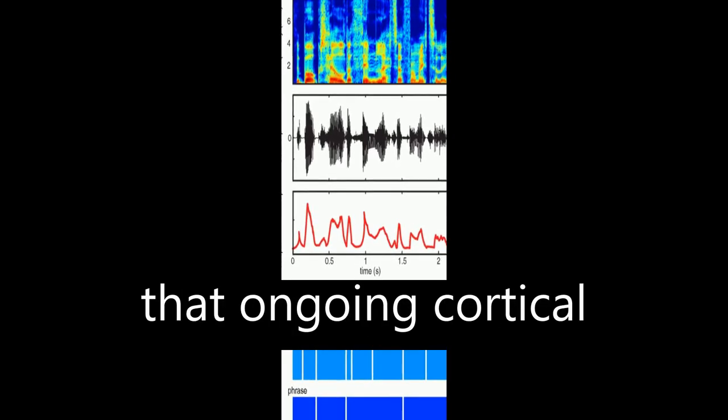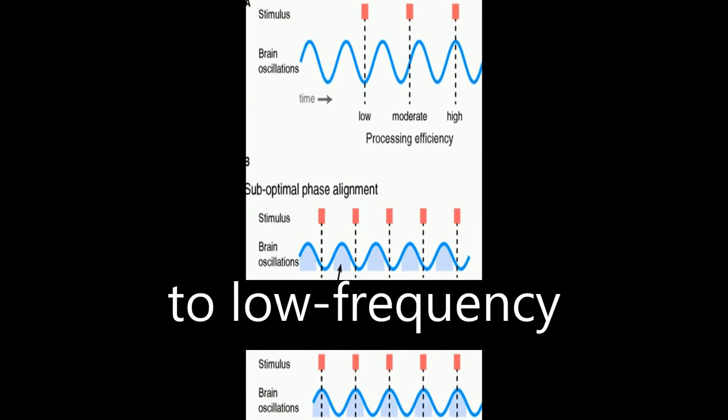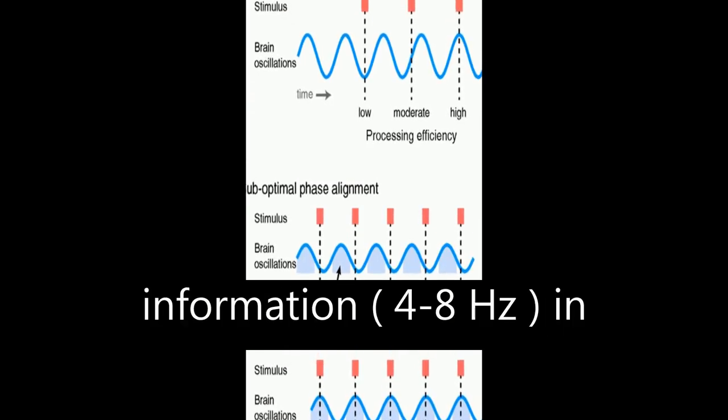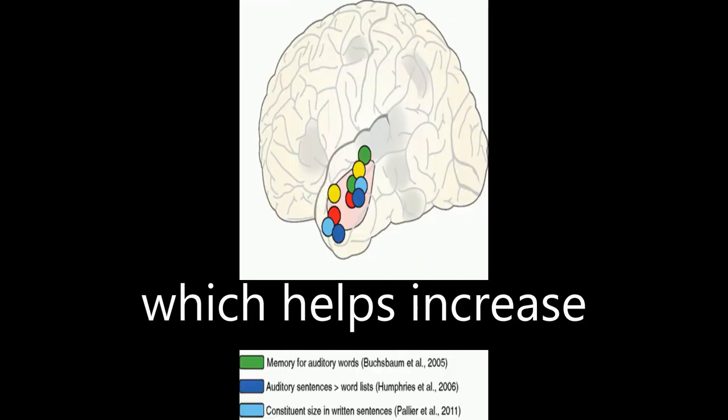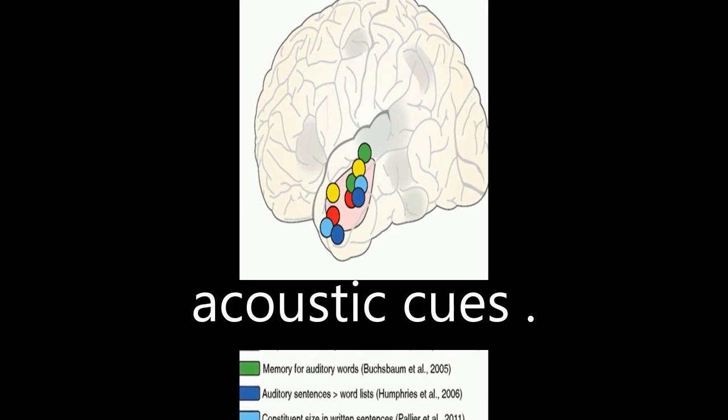Neuroimaging data shows that ongoing cortical oscillations phase locked to low frequency information, 4 to 8 hertz, in the speech envelope, which helps increase sensitivity to relevant acoustic cues.